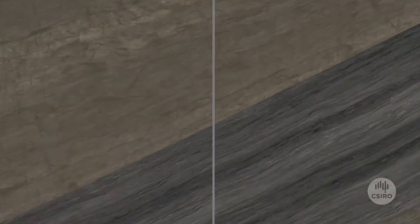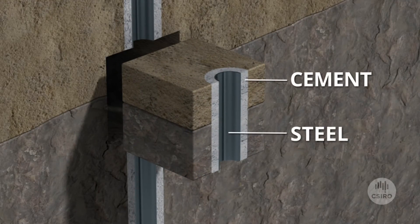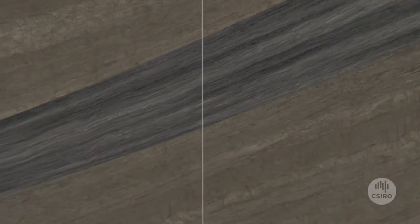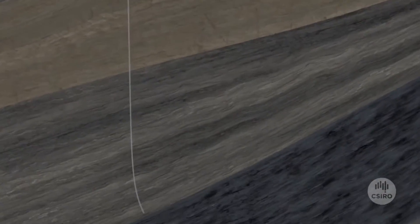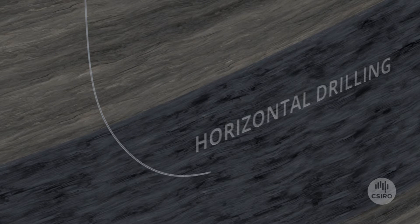To protect groundwater from contamination, the well is lined with cement and steel casings. Horizontal drilling is a technique used to maximise shale gas recovery and minimise surface impacts.